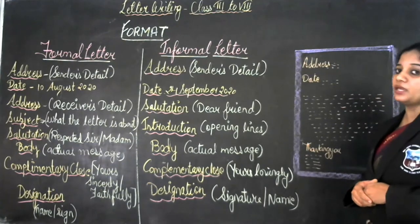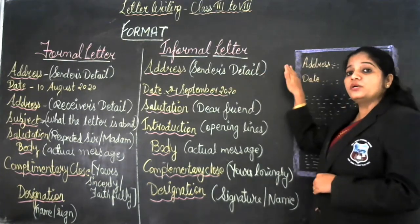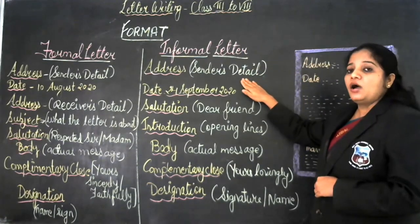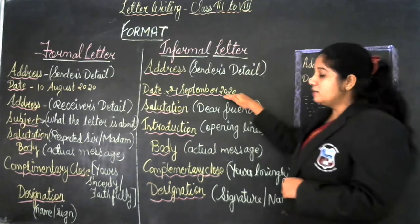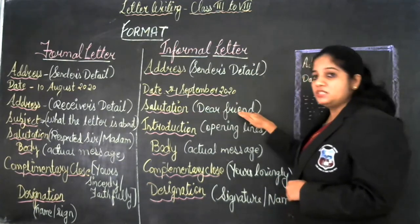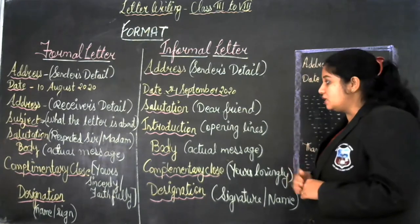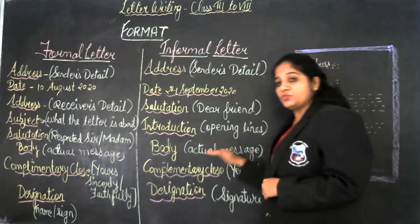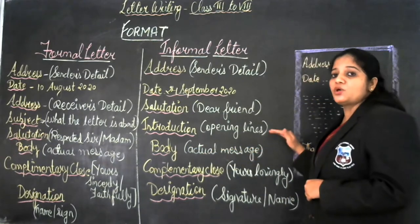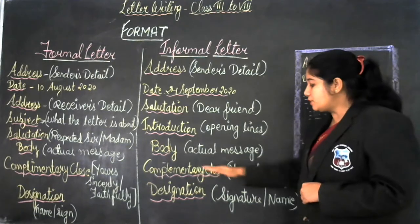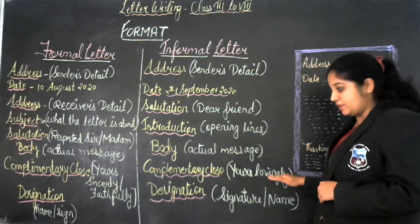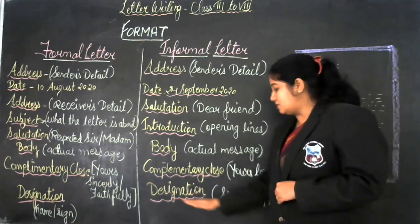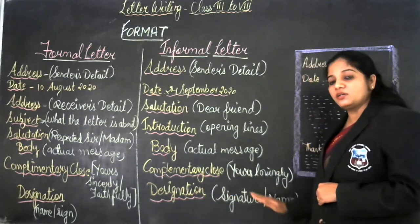When writing an informal letter, the format will be as follows: Address — the sender's address and name — then the date, salutation such as dear friend or dear uncle, introduction with the opening lines of the letter, body with the actual message, complimentary close such as yours lovingly, and finally the designation, signature, and name.